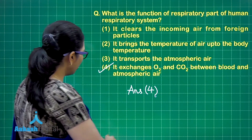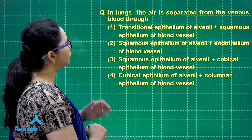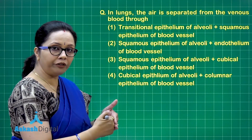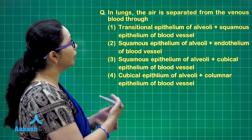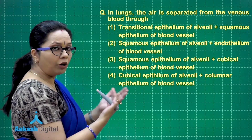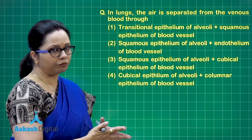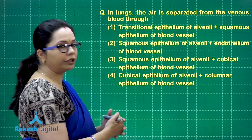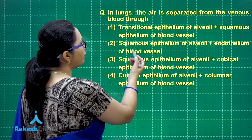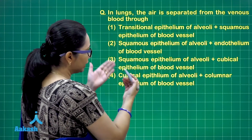Next question: In the lungs, the air is separated from the venous blood through what structure? We just studied the respiratory membrane, so it is the respiratory membrane which separates air from blood. Transitional epithelium is a special epithelium associated only with the urinary system, so it cannot be part of the respiratory system. Option C — squamous epithelium of the alveoli plus the endothelium of the blood vessels — is correct.